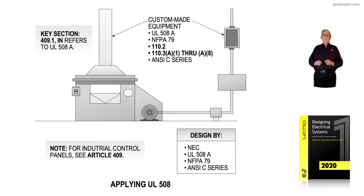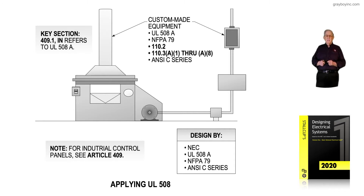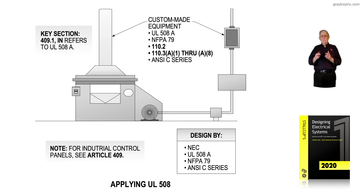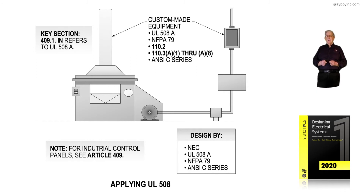The note above says for industrial control panels, which we're dealing with here, we would see Article 409 for the NEC rules. Custom-made equipment is listed under UL 508, which now contains both standards. NFPA 79 applies if that industrial control panel is operating in conjunction with NFPA 79.